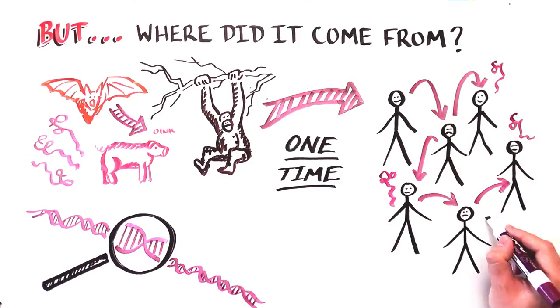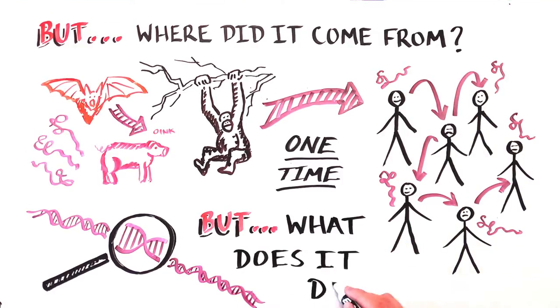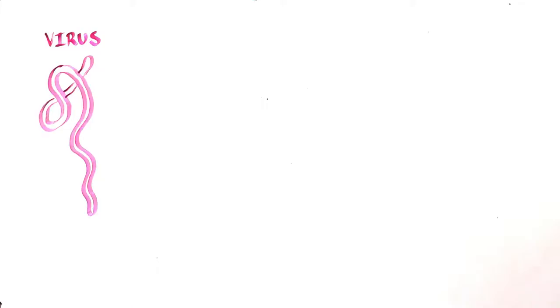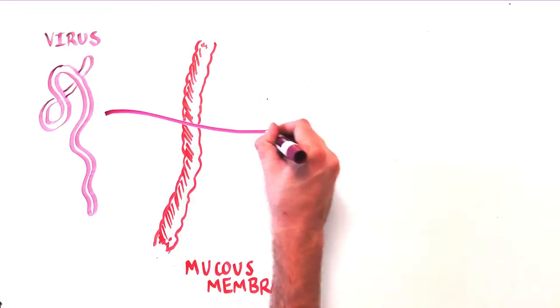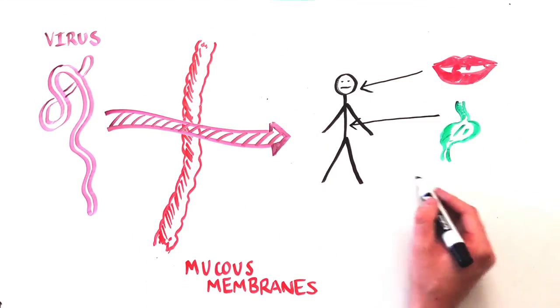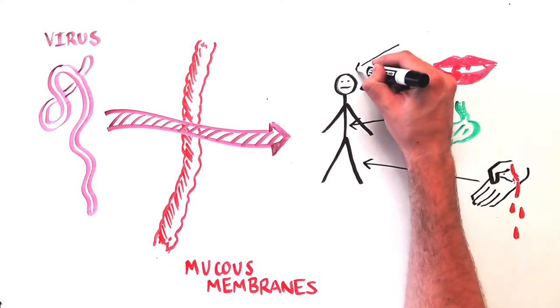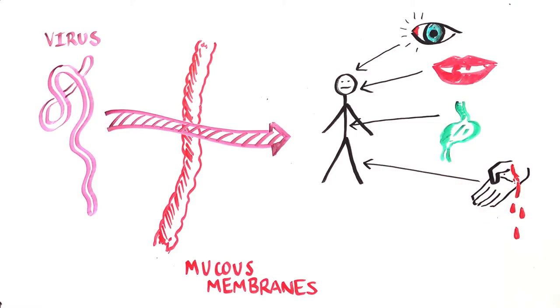After that, the virus has spread from human to human. So what does the virus actually do? The virus enters the body through mucus surfaces such as the mouth, digestive tract, breaks in the skin, or even the inner surface of the eyelid.